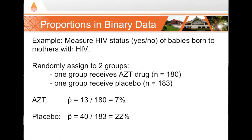And in terms of describing our binary data, that's it. Proportion is the only summary statistic we need for binary outcomes.